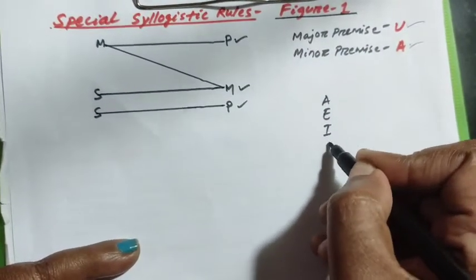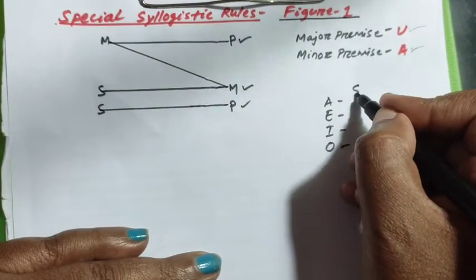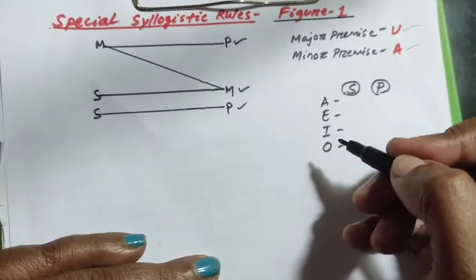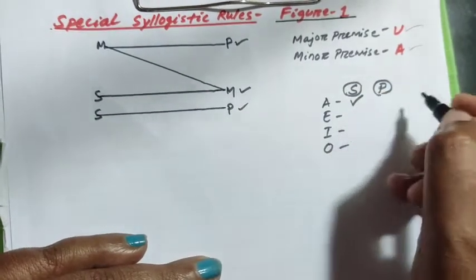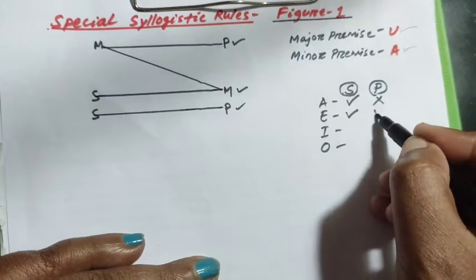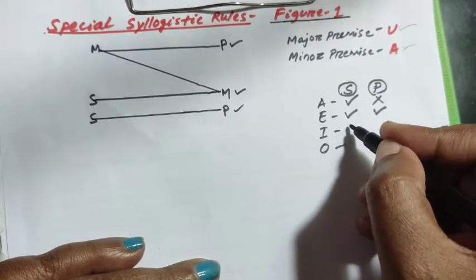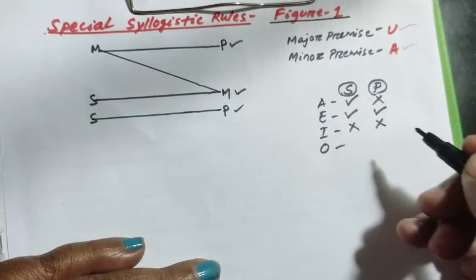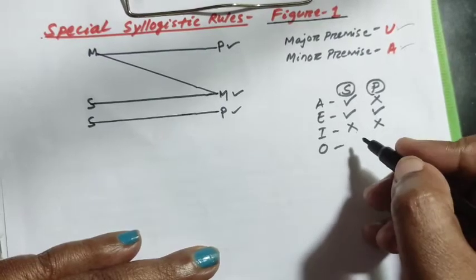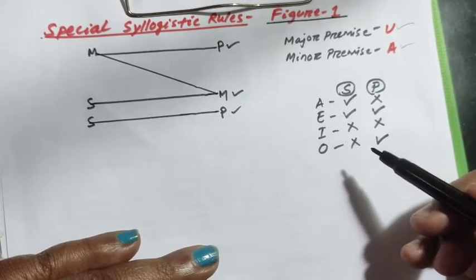Before we start, let us remind ourselves of the rules. There are four types of proposition: A, E, I, O. An A proposition is a universal affirmative — it distributes only the subject. An E proposition is a universal negative — it distributes both subject and predicate. An I proposition is a particular affirmative — it does not distribute subject or predicate. An O proposition is a particular negative — it distributes only the predicate. That means only universal propositions distribute their subject, and negative propositions distribute their predicate.